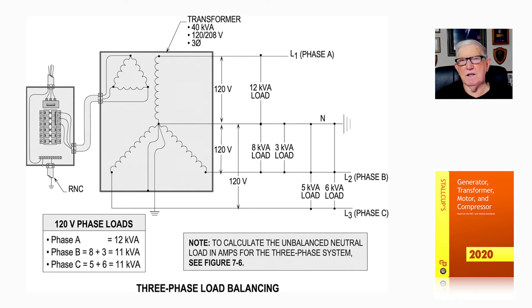So when you add those together, that's how we come up with 120-volt phase loads right below the transformer there: phase A is 12, then B is 8 plus 3 to give you 11, and C again, 5 plus 6 is 11.